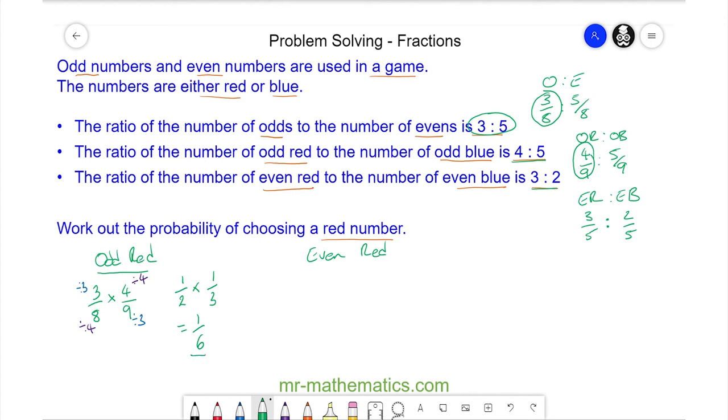For the probability of an even red, we know 5/8 of them are even. And of these 5/8, we have 3/5 which are also red. Again we can simplify this product by dividing by 5. So now we have 1/8 multiplied by 3/1 which is 3/8.